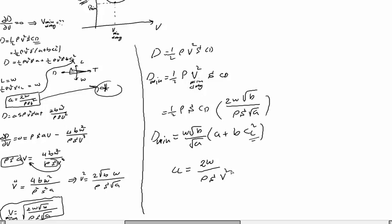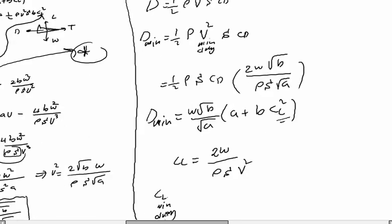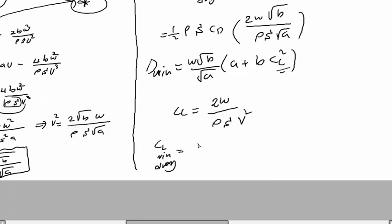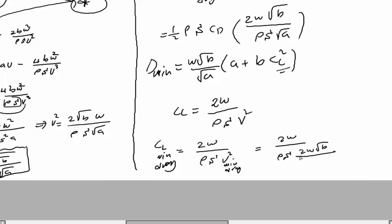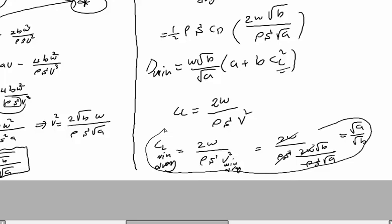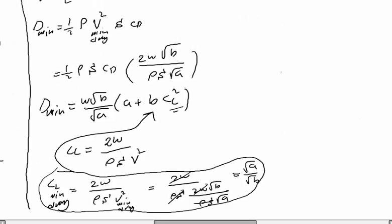Using v_min_drag in the expression CL = 2W / (ρS·v²), we find CL at minimum drag. Substituting v² = 2W√b / (ρS√a) gives CL_min_drag = √(a/b). This is then substituted into the full drag expression to obtain the final result for minimum drag.